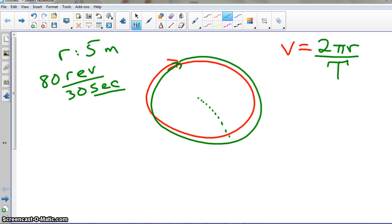Well, that becomes pretty easy. You go 2 times pi times r, which is 5, so that's 10 pi, over the period. Now, what's the period here, kids?